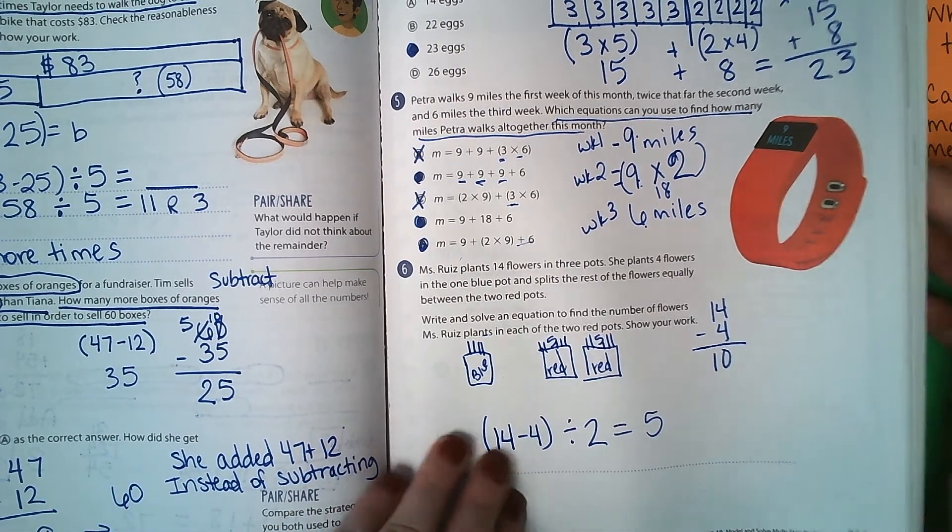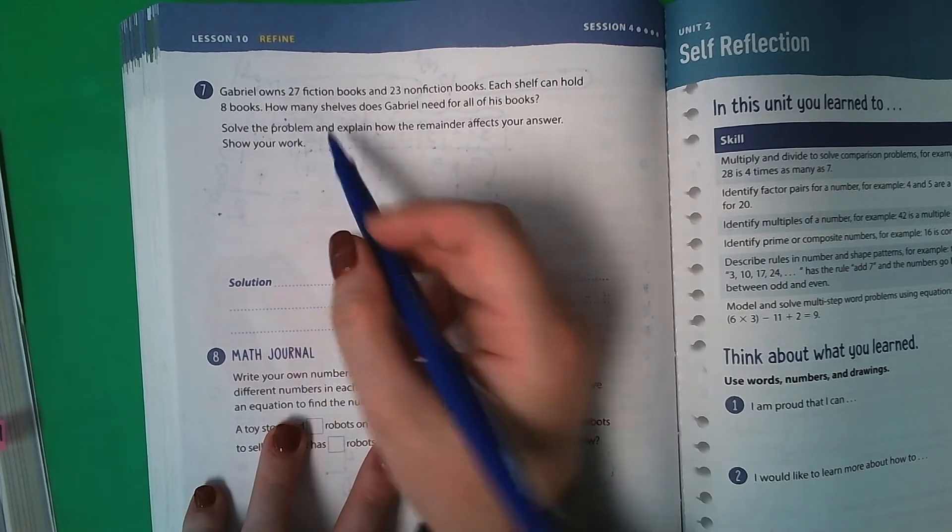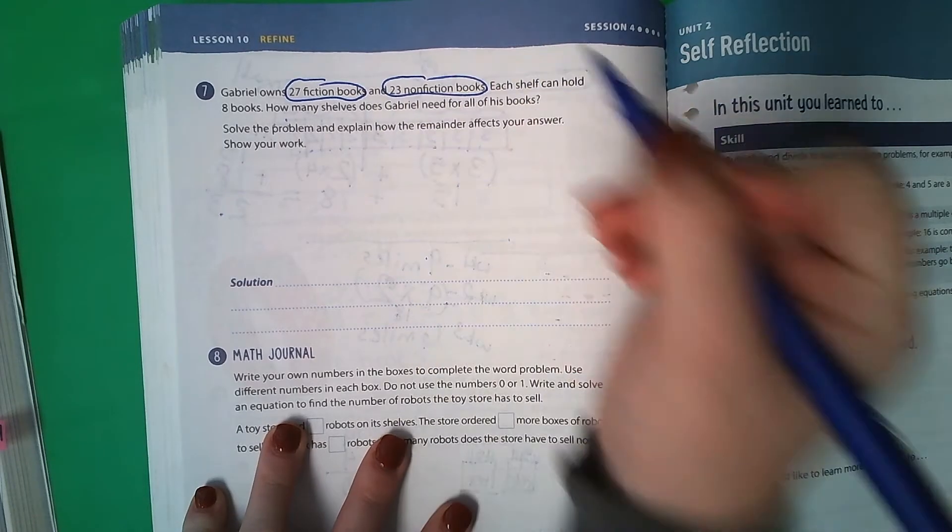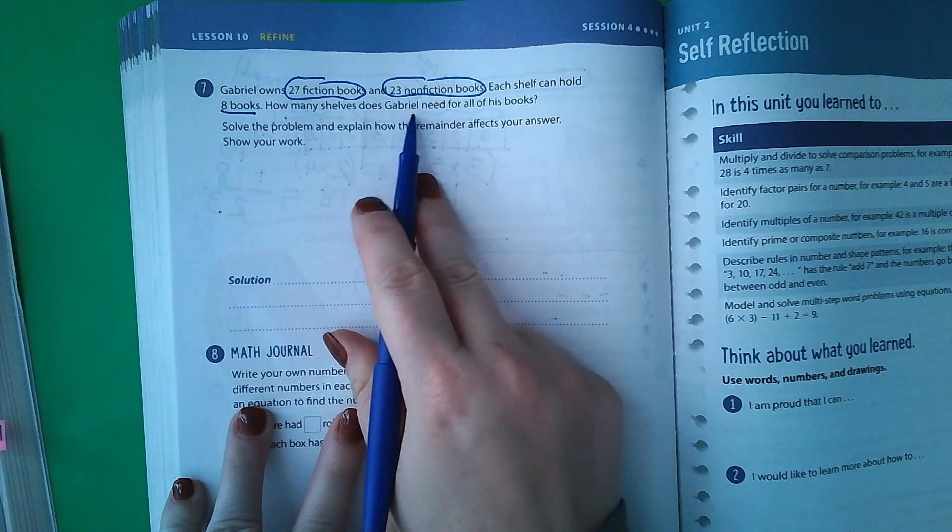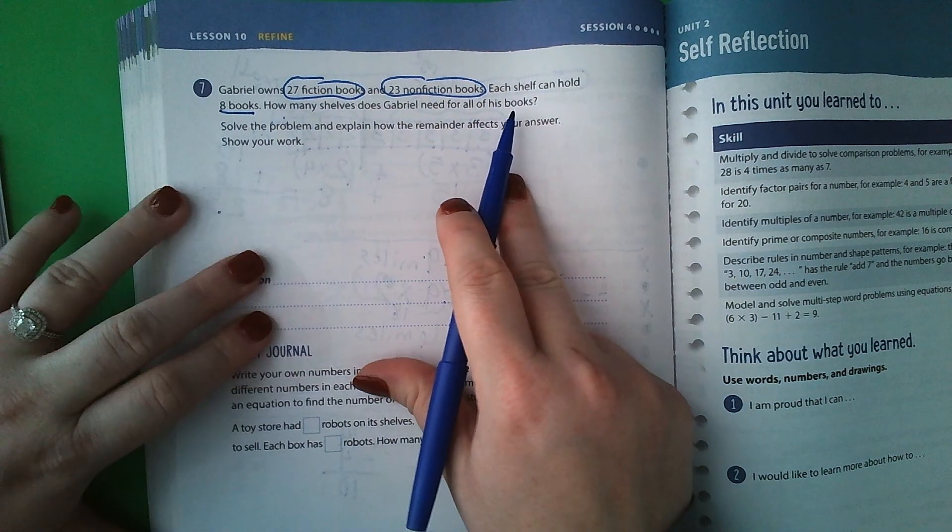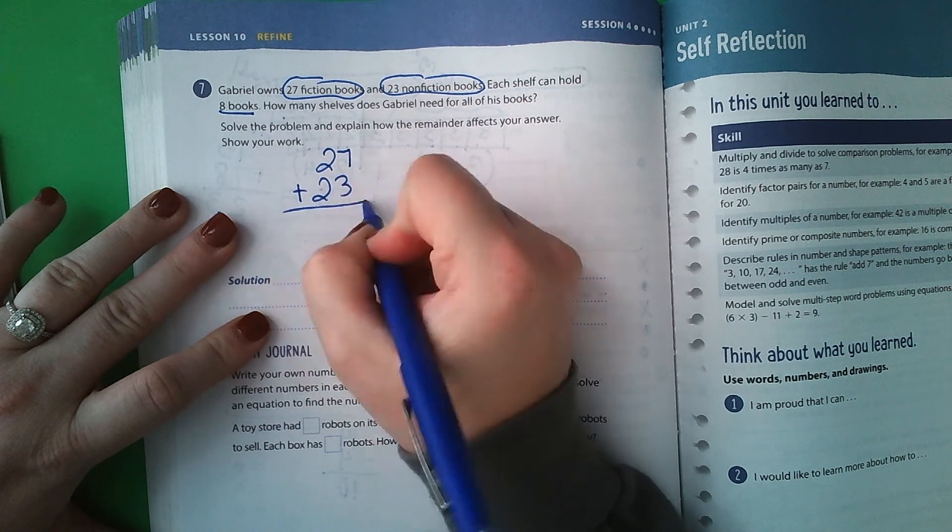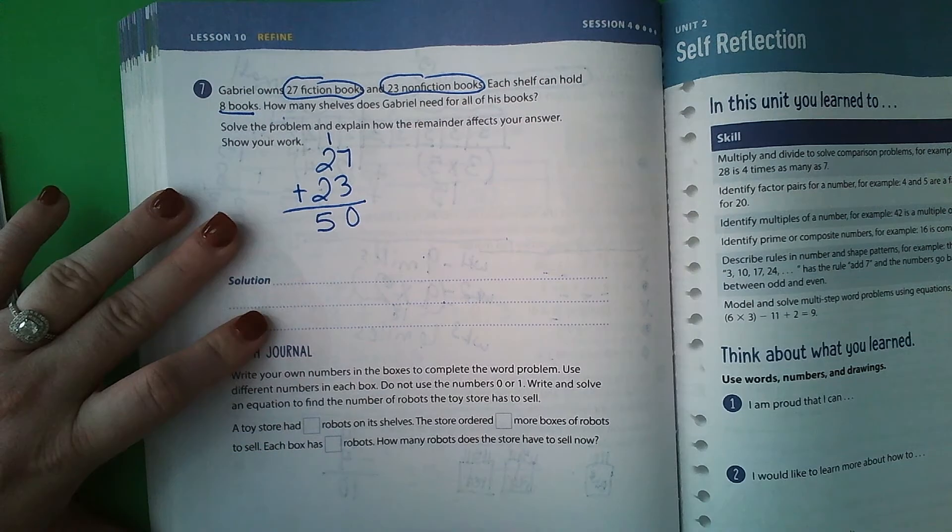Last page, 212. At the top. Gabrielle owns 27 fiction books and 23 nonfiction books. Each shelf can hold 8 books. How many shelves does Gabrielle need for all of his books? Well, first I need to do 27 plus 23. 7 plus 3, 0, 1. So he's got 50 books.